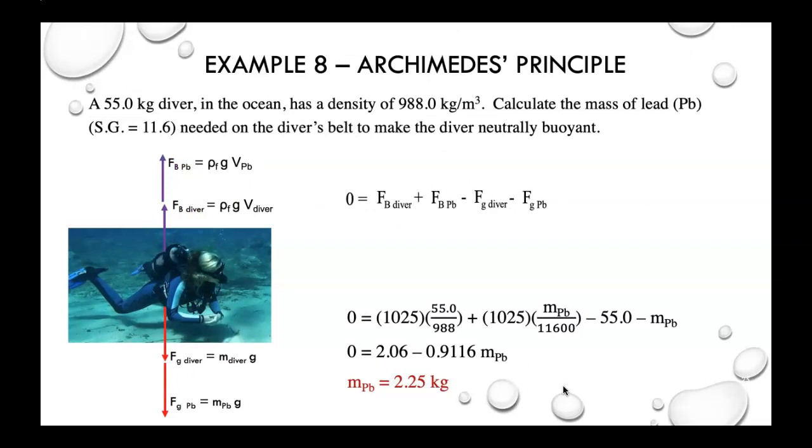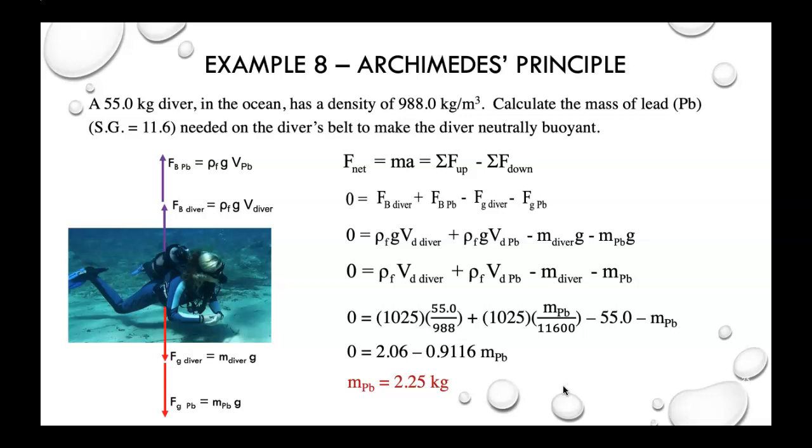Alrighty. I think this is our last one. We have a diver with a density. Calculate the mass of lead needed on the diver's belt to make the diver neutrally buoyant. Now, those words, neutrally buoyant, underline those. That means the forces up equal the forces down. You want the diver to stay at a certain level in the water and not float up and not float down. That's neutrally buoyant. So with this problem right here, we could say that the net force is the forces up minus the forces down, or this thing could have been, and the net force was zero. Or you could have started this first line and said the forces up equal the forces down. Both the same thing. So if the forces up equals the forces down, you expand. You've got the buoyant force of the diver is density, gravity, volume. Then the force of buoyancy of the lead, density, gravity, volume. Then you've got the force of gravity of the diver and the force of gravity of the lead.